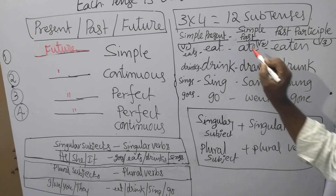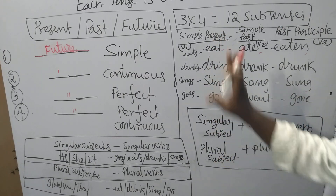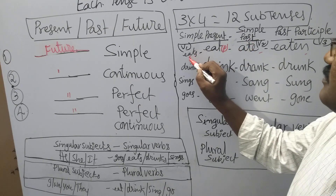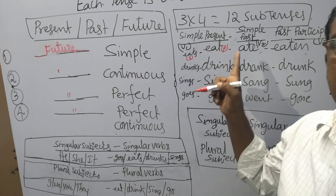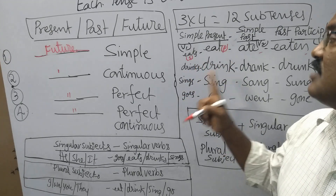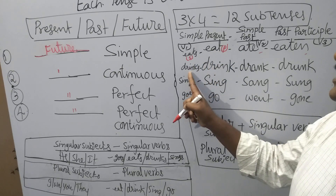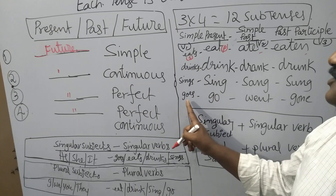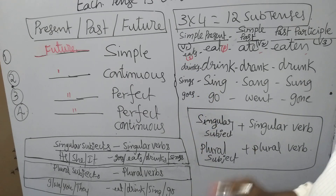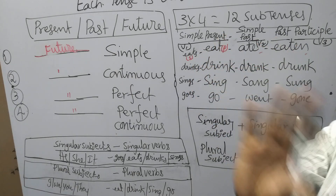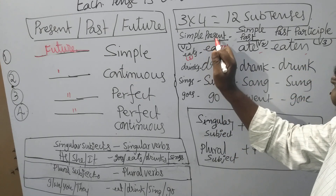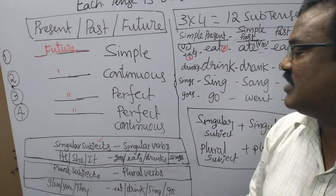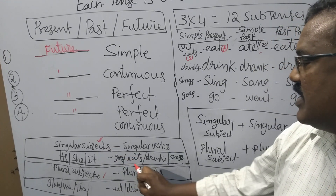If you add 'S' to a verb, it will become singular. Drink — drinks (singular verb); sing — sings (singular verb); go — goes (since it ends in 'O', we add 'ES'); finish — finishes (since it ends in 'SH', we add 'ES'). In past tense, such singular-plural difference is not there — no need to add 'S'. Only in simple present verb do we take singular/plural into consideration.